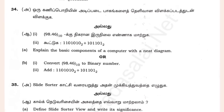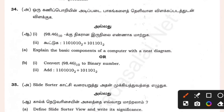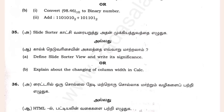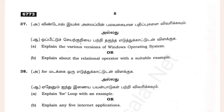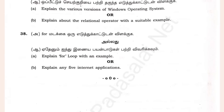A is easy and B is easy. The basic components of a computer is a neat diagram — it is very easy for people to use. You can use the HTML code, it is easy to use. Let's explain the for loop with an example, then explain any internet application.